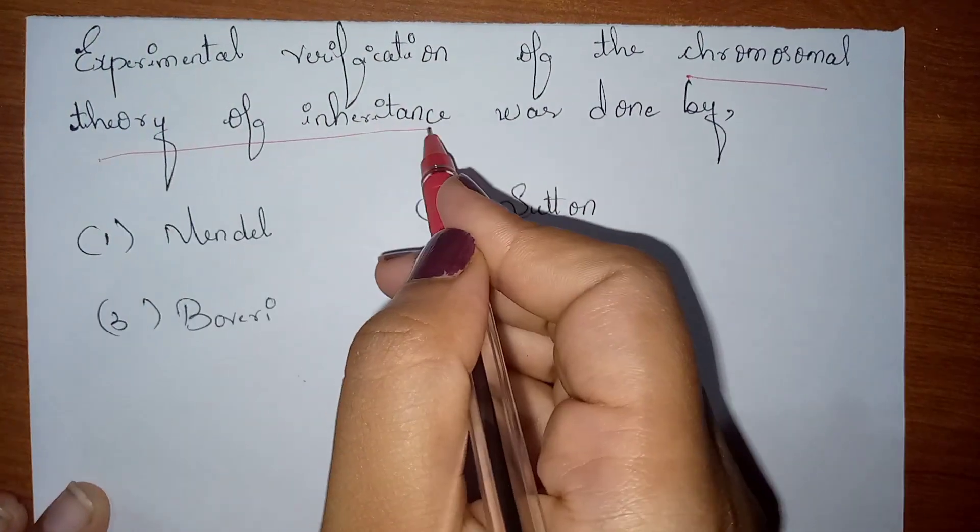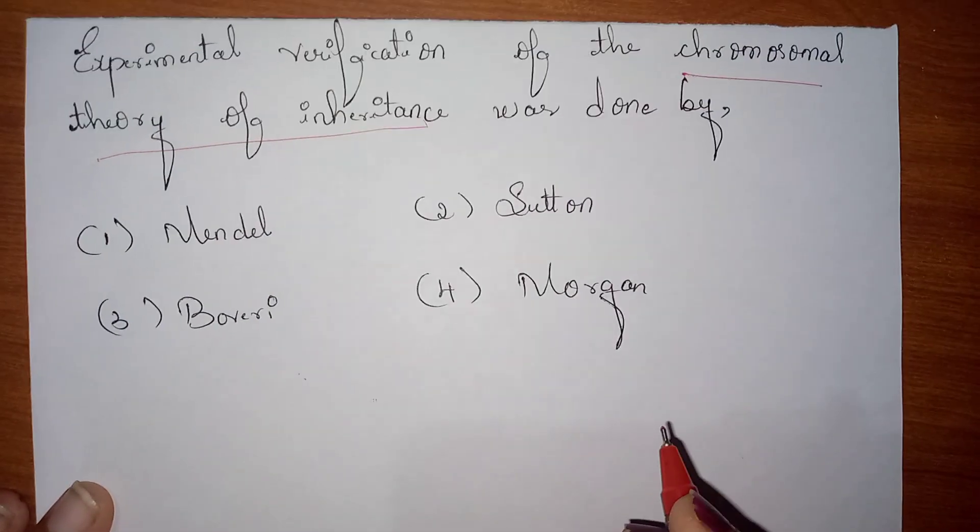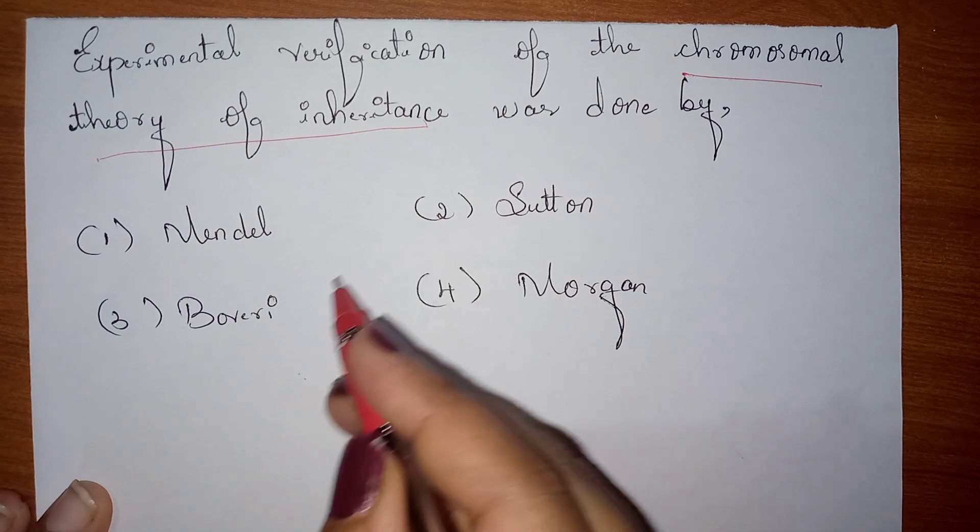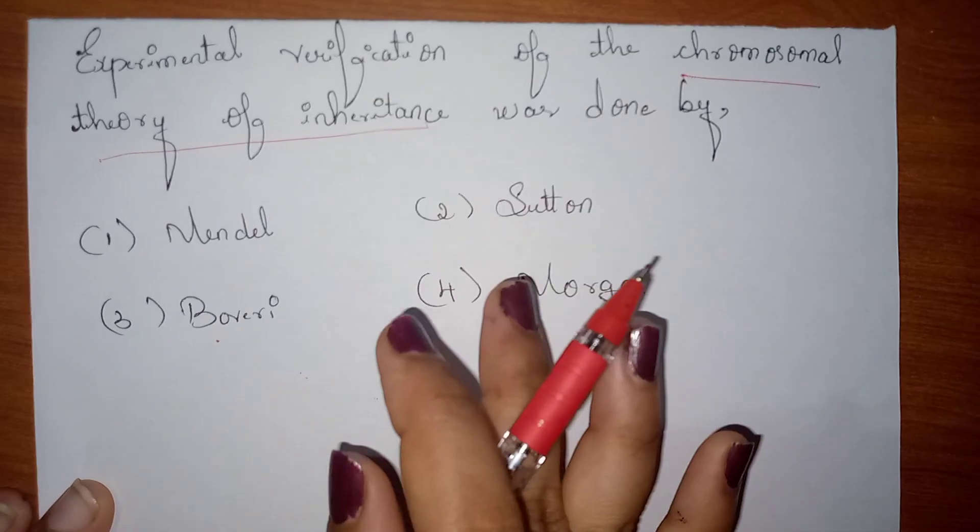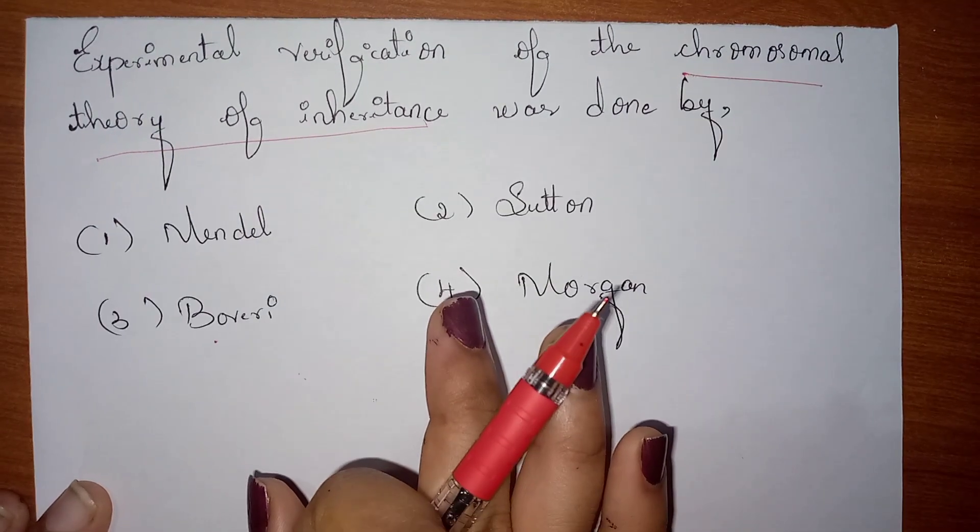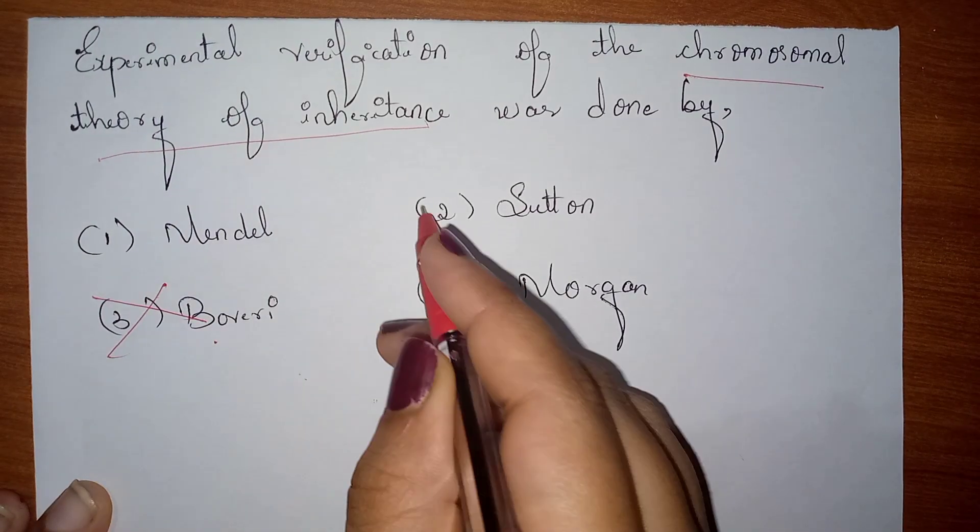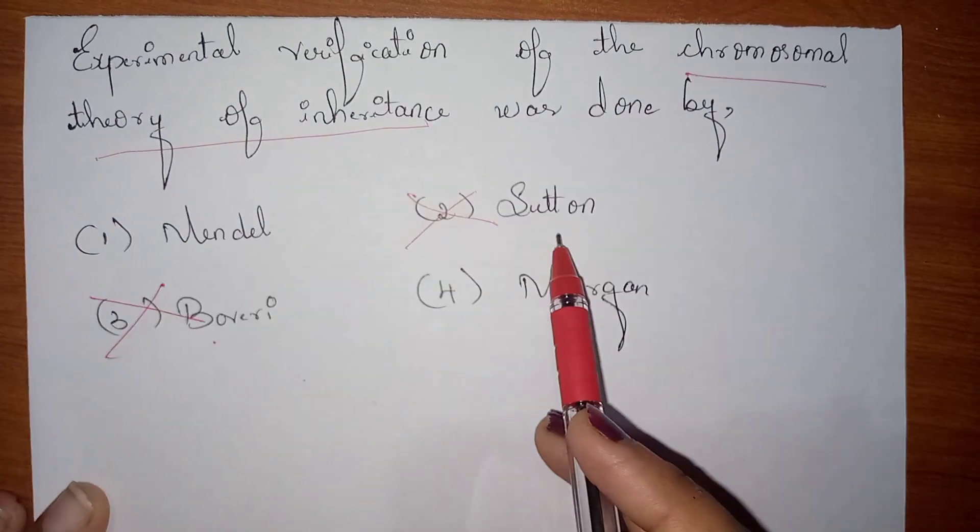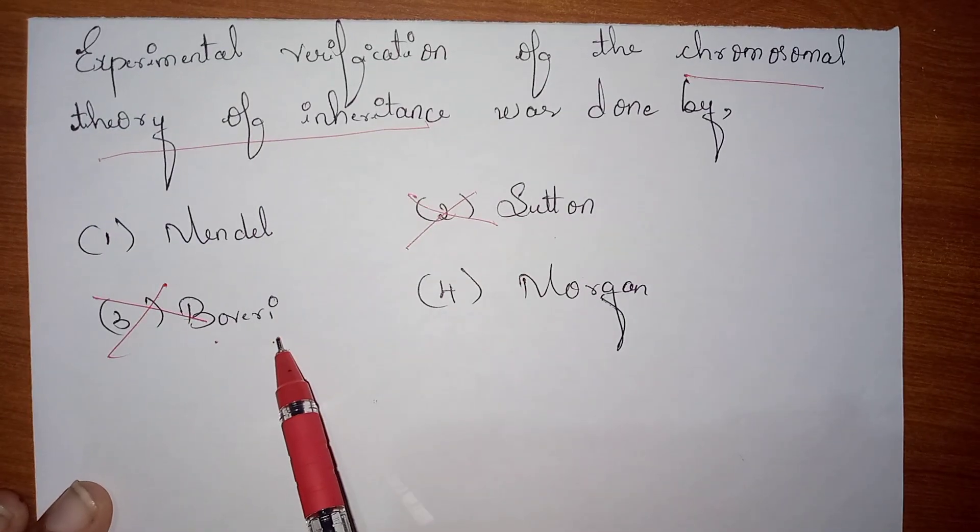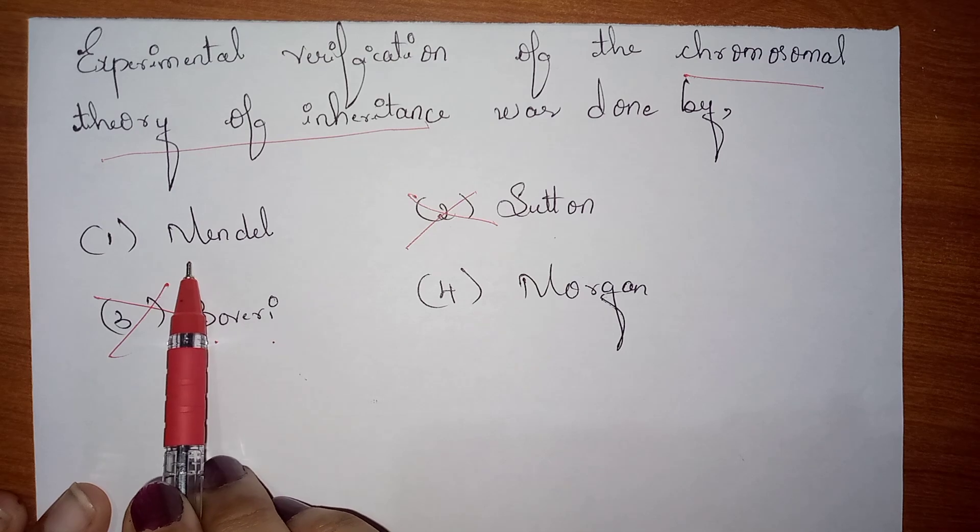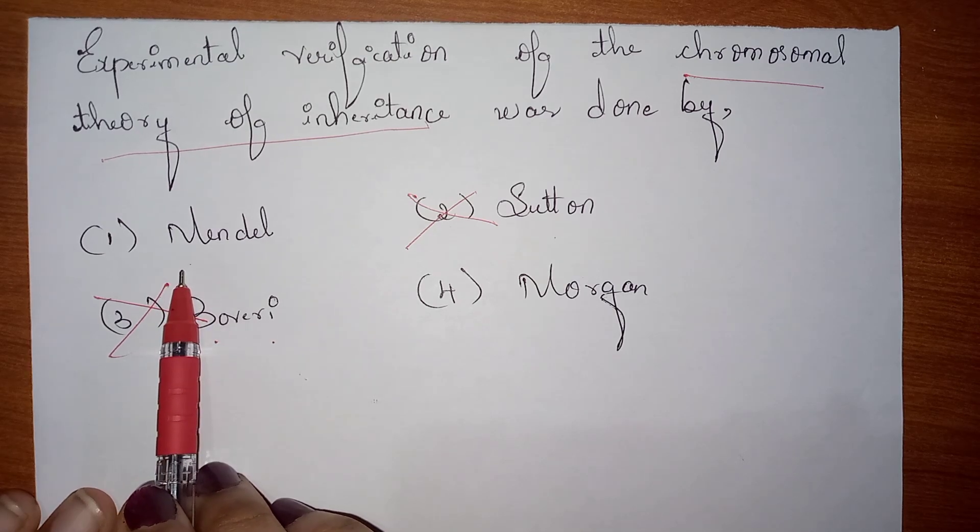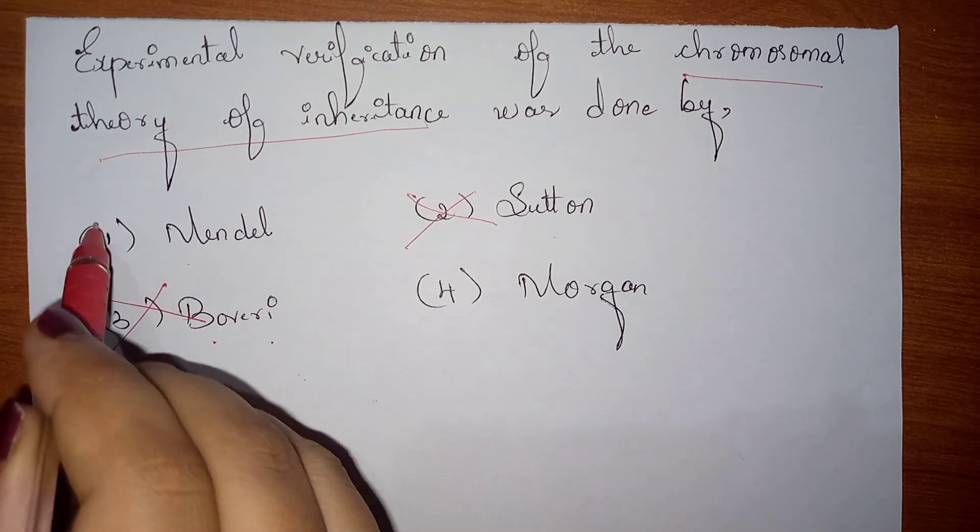Here, the first, the chromosomal theory of inheritance was first proposed by Sutton and Boveri. They just proposed this theory but they did not do any experimentation, so these two are not the option. And this proposed theory was next further carried out by Mendel.